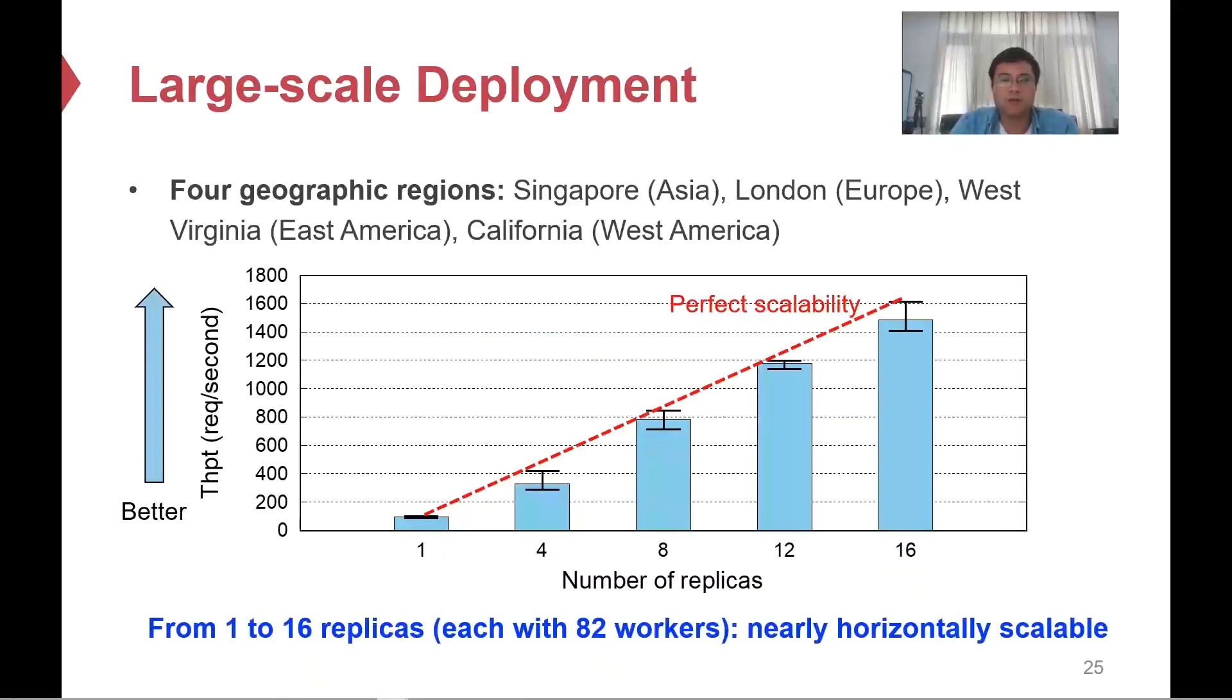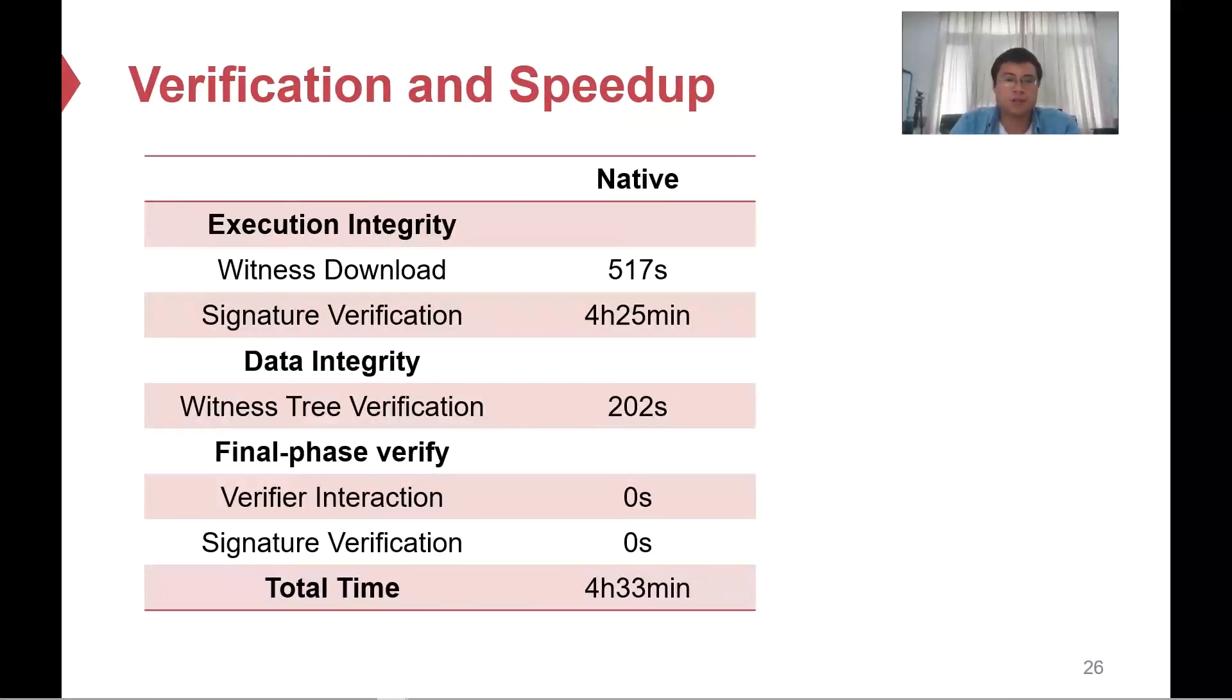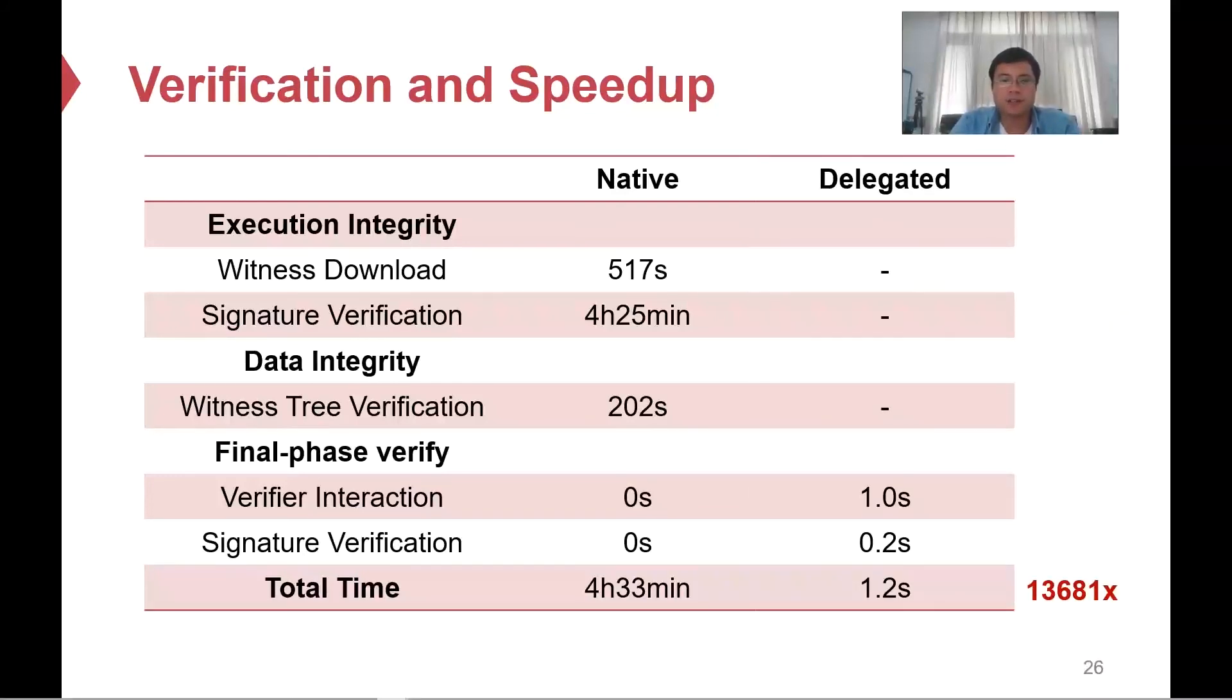We deploy D-Search on four geographic regions, each with 82 workers, and the experiments show that the throughput of our system can scale horizontally. In native verification where a client verifies the search results independently, it takes four and a half hours to do so. In delegated verification where the verifier examines the execution integrity and data integrity on behalf of the user, it only costs about 1.2 seconds, significantly accelerating the verification process. This speedup is because common items and common indexes have common witnesses. Hence, the common witness checking can be reused.